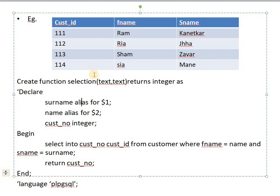A function can accept up to 16 arguments. When many arguments are passed, identifying which is first or second becomes difficult. In PL/pgSQL we use a dollar symbol to reference arguments: $1 refers to the first argument, $2 to the second, and so on up to $16.